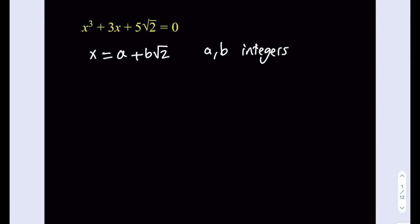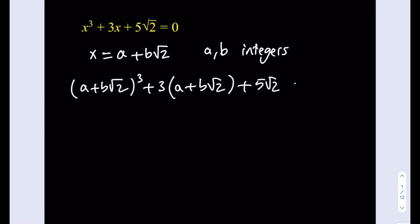We don't know at this point if this equation has one, two, or three real roots, or how many complex roots it has. But first we're going to try to find one of the solutions this way and then proceed. I'm going to replace x with a + b√2, so it's going to look like: (a + b√2)³ + 3(a + b√2) + 5√2 = 0. And I'm just going to expand it.